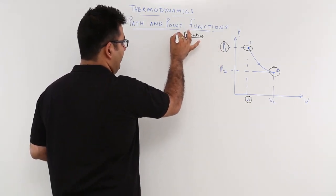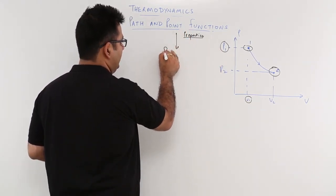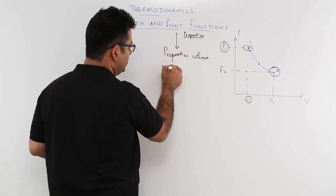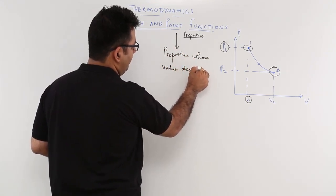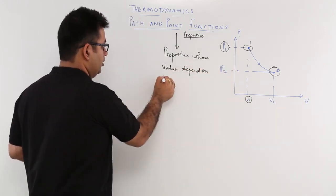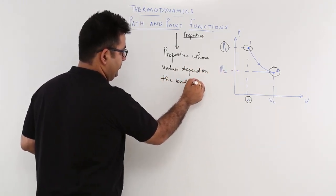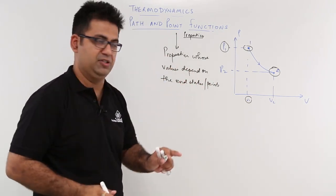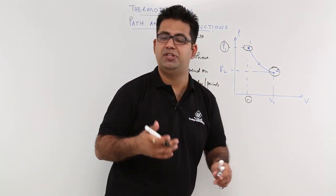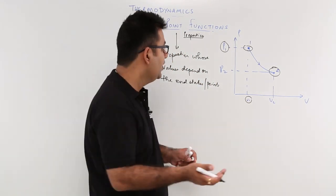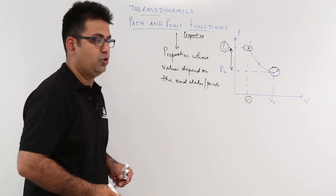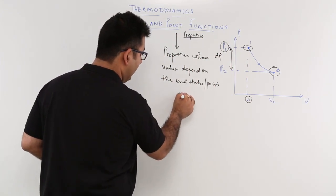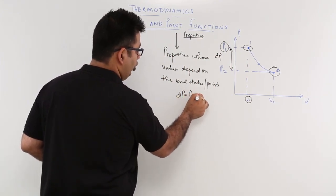To define the point functions: the system properties whose values depend on the end states or those particular points are called point functions. So if I have to find out the change in the pressure property, I would represent this as dp, and dp would be written as P2 minus P1.